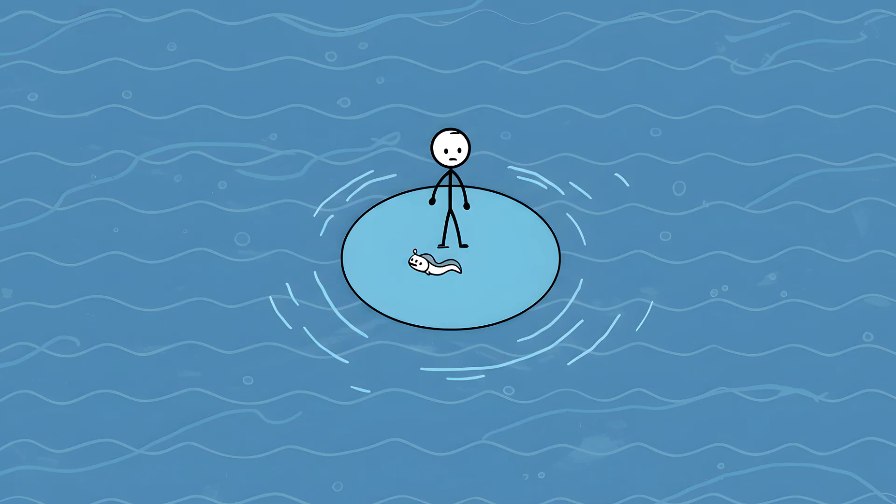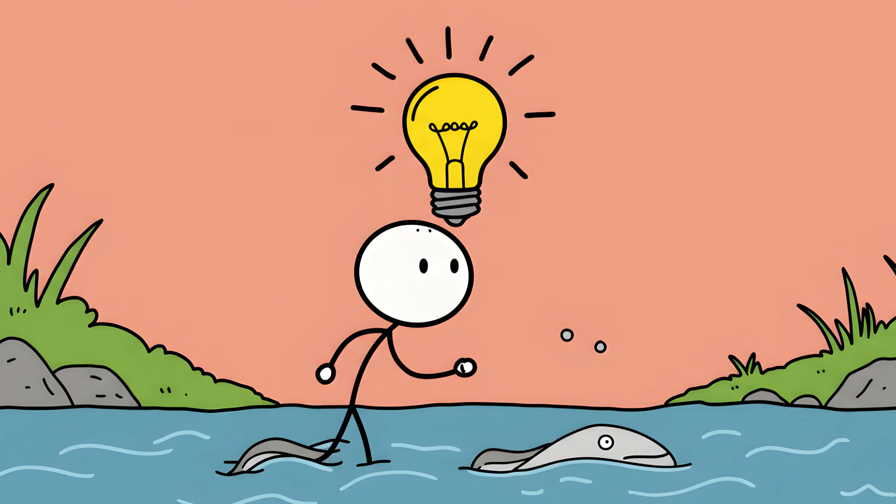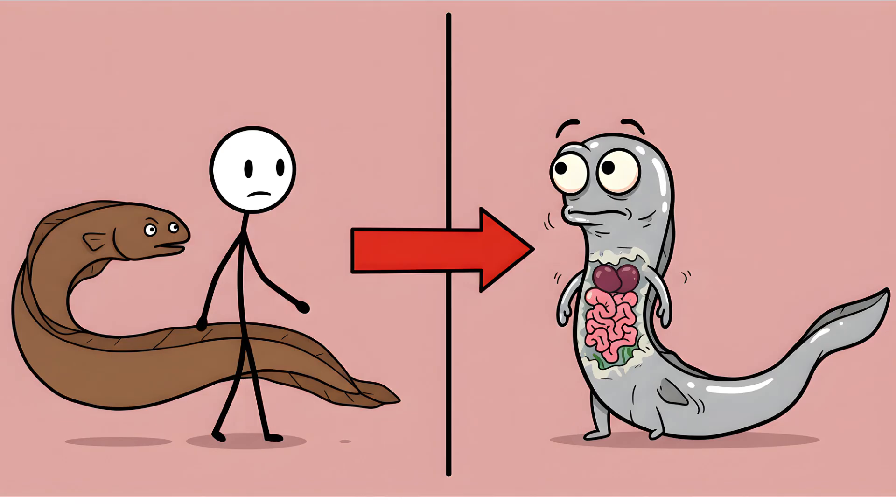We know a little more now, but it only makes things weirder. We know that eels are born in the Sargasso Sea, a weirdly calm patch of the Atlantic Ocean. They drift as tiny, transparent, leaf-shaped larvae for up to three years, before hitting the coasts of Europe and North America. They swim up rivers, live for 20 years as freshwater fish, and then one day, something clicks. They transform. Their eyes get bigger. Their skin turns silvery. They stop eating. And their digestive systems literally dissolve to make room for massive reproductive organs.